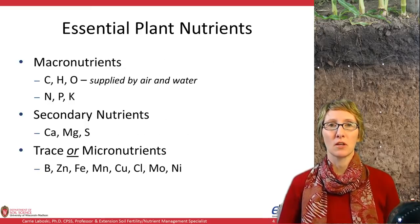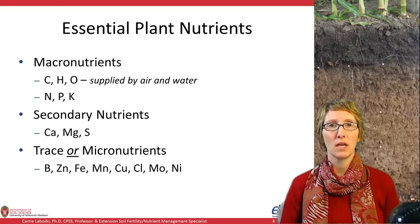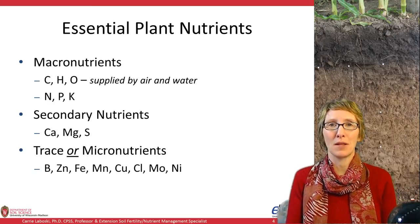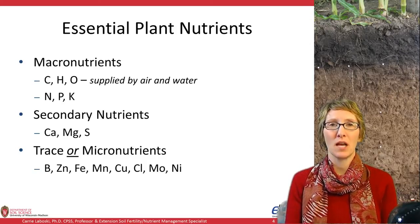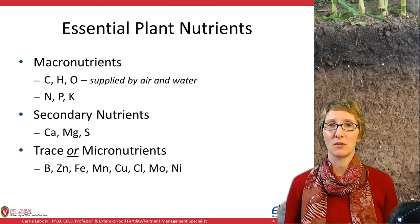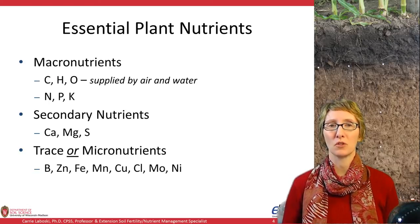Our essential plant nutrients — we'll have more in depth on these in other videos. We need to think about our macronutrients. We don't always think about carbon, hydrogen, and oxygen as macronutrients, mainly because they're supplied by air and water and we're not applying them in fertilizer. But we have to keep in mind that they are used in large quantities by the plant, so they truly are macronutrients. Then we get into nitrogen, phosphorus, and potassium — again, used in large quantities. Secondary nutrients are considered secondary because they're required by the plant but in smaller amounts than the macronutrients, and include calcium, magnesium, and sulfur.